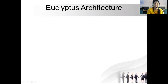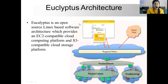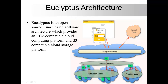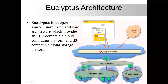Let's start today's lecture with Eucalyptus architecture. Eucalyptus is an open source Linux-based software architecture. It provides an EC2 (Elastic Compute Cloud) compatible cloud computing platform and S3 (Simple Storage Service) compatible cloud storage platform. So computing and storage platforms are both provided by Eucalyptus. The architecture diagram consists of many components including a Eucalyptus interface, virtualized network, management platform, external clouds, and virtualized storage.